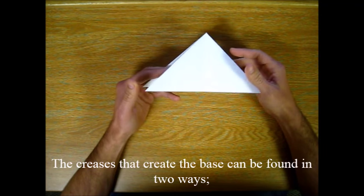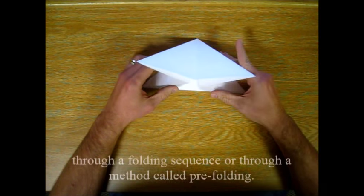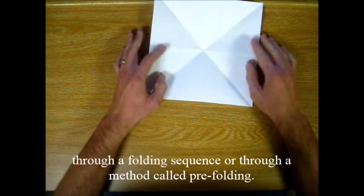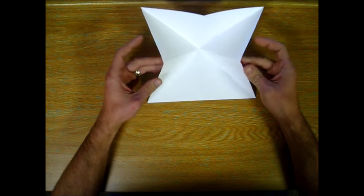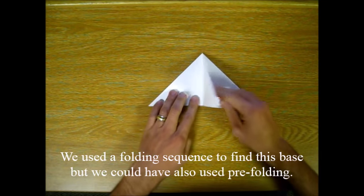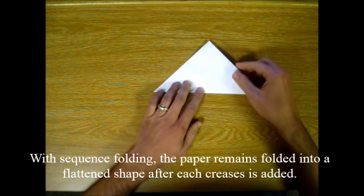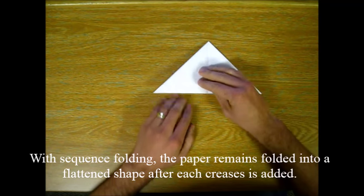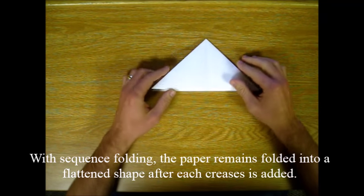The creases that create the base can be found in two ways. Through a folding sequence or through a method called pre-folding. We used a folding sequence to find this base but we could have also used pre-folding. With sequence folding the paper remains folded into a flattened shape after each crease is added.